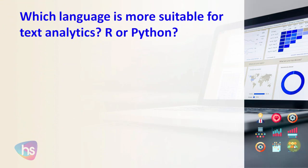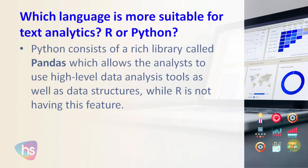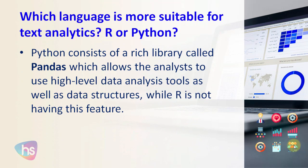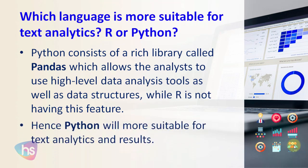Which language is more suitable for text analytics — R or Python? Python. Python consists of a rich library called pandas, which allows the analyst to use high-level data analysis tools as well as data structures, while R does not have this feature. Hence, Python is more suitable for text analytics.